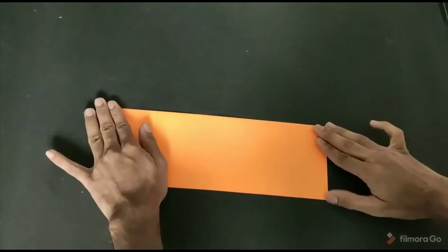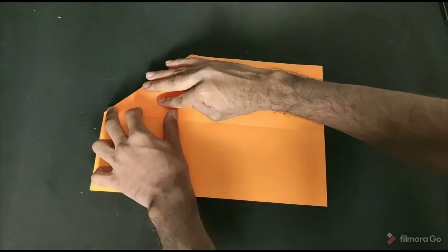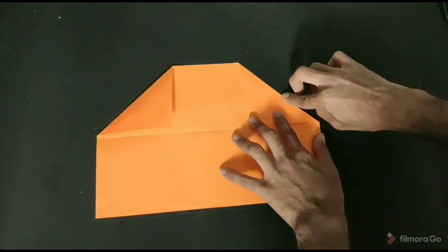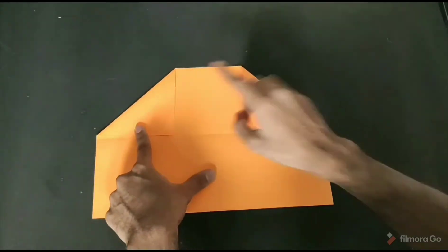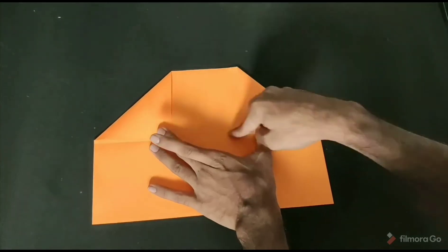Unfold it again. Now fold it into right angles as shown. This has to be 90 degrees with this line. Okay, now again fold it into half with respect to this line.